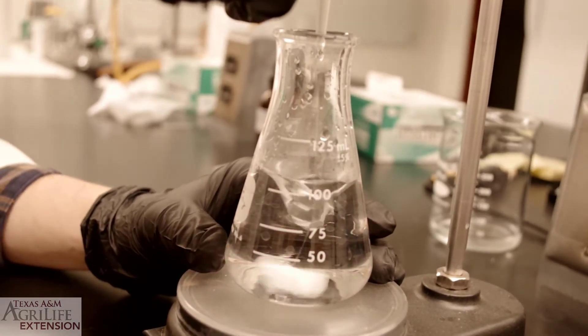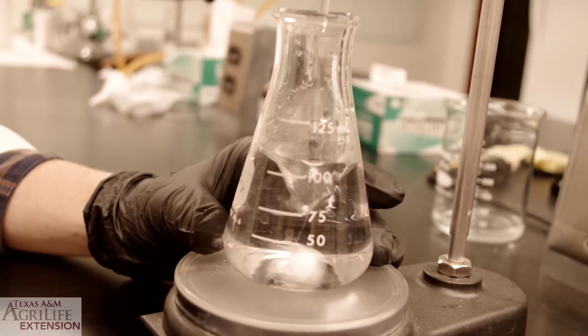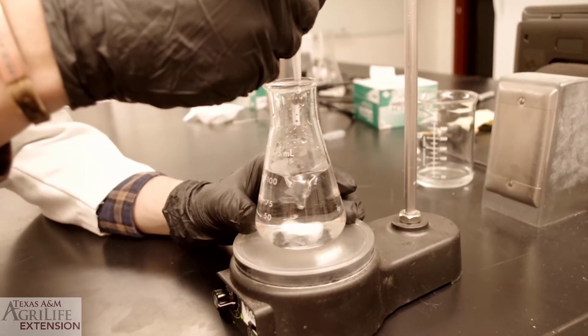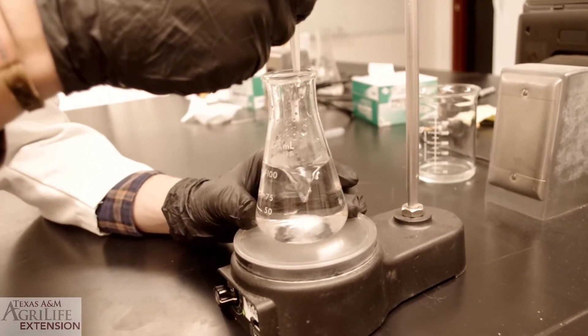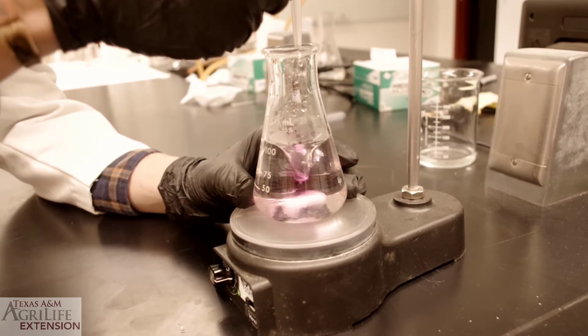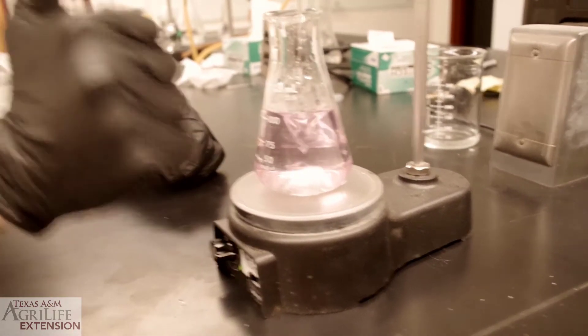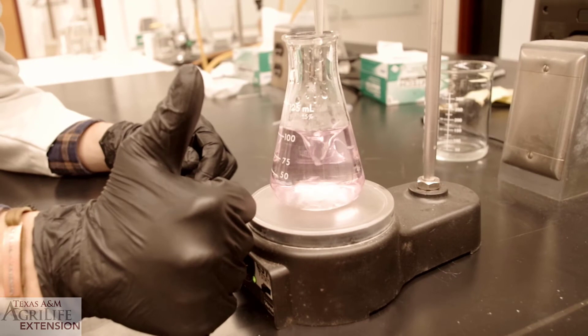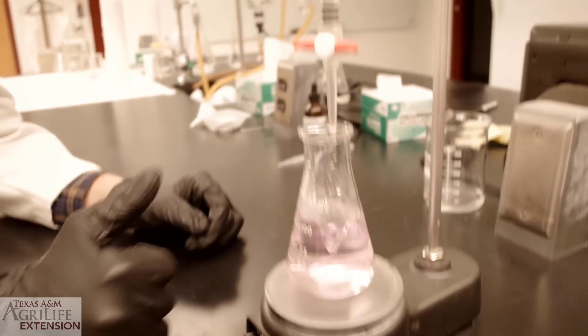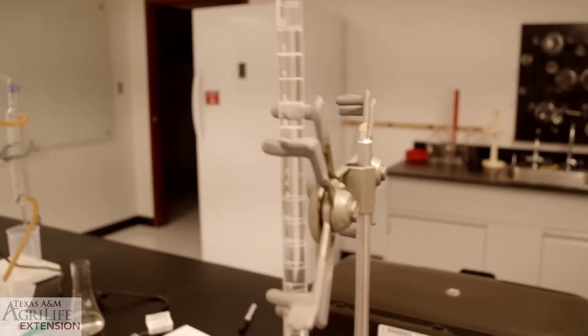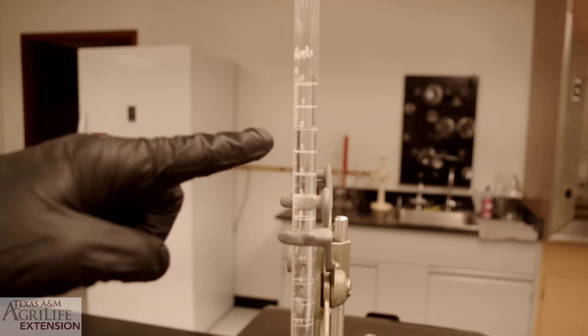We are now close to the end of our titration. Now, make a note of the total volume of sodium hydroxide used in the process. In our case, we used 2 milliliters.